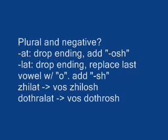If your verb is plural and negative, it's -OSH all the way. For AT verbs, drop the ending and add -OSH at the end. For LAT verbs, drop the ending, replace the last vowel with O, and add -SH at the end. Zilat would become kisha vos zilosh, and dothralat would become kisha vos dothro.